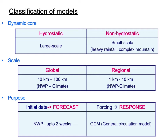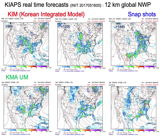There are various ways to classify a model. In terms of dynamic core: hydrostatic versus non-hydrostatic. In terms of scale: global model or regional model. In the global model, the resolution for numerical weather prediction is on the order of 10 km, and on the order of 100 km for climate studies; for regional models, one order smaller. We can also classify by purpose. Prediction is a snapshot given the initial condition, while climate study or seasonal prediction is the response to a given forcing.